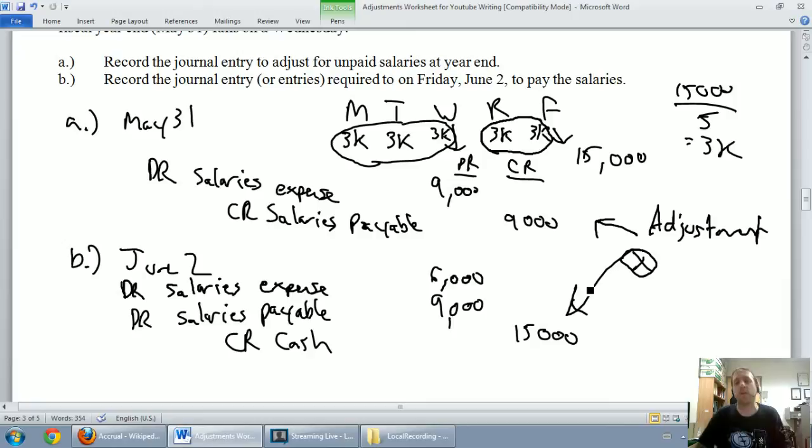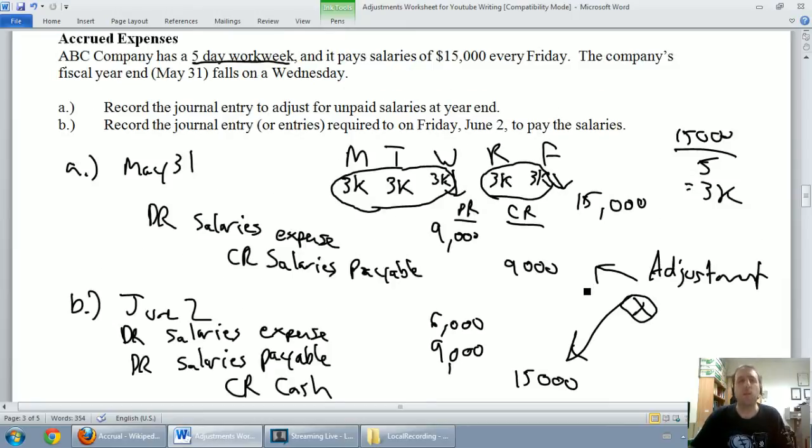That's it for accrued expenses. Maybe my weak definition is think of an expense that's built up that hasn't been paid. In this case, our salaries have built up to Wednesday. We owe our employees $9,000. Debit salaries expense, credit salaries payable. Then we went ahead and paid them on our second part of our entry. That's it for this one. Stay tuned for accrued revenues.